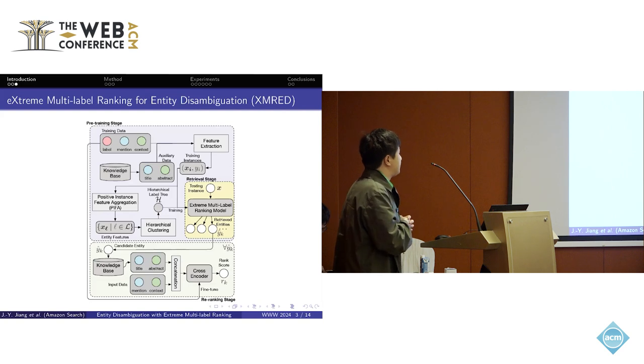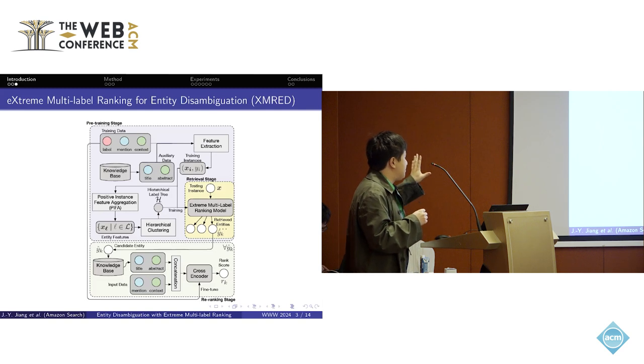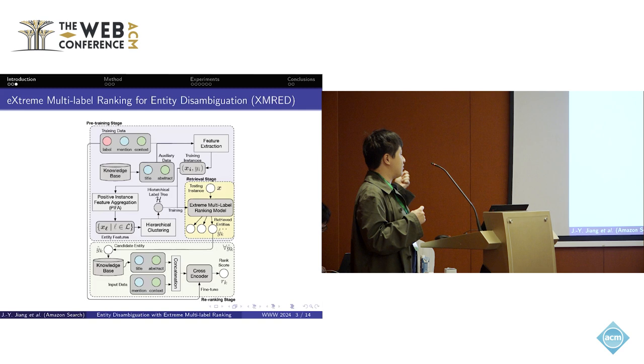In this work, we present a framework called Extreme Multi-label Ranking for Entity Disambiguation (XMRED), and it consists of two stages. In the first pre-training stage, we train an extreme multi-label ranking model based on positive instance feature aggregation, so we can have entity features and hierarchical clustering to create a hierarchical label tree. We can use the extreme multi-label training to have the ranking model, which can be considered as a retriever to select a few limited set of candidate entities. With those candidate entities, we enter the second re-ranking stage. Based on those candidates with a very limited amount, we're allowed to use cross-encoders to examine the ranking score for those entities, so we can pick up the entity with the highest score.